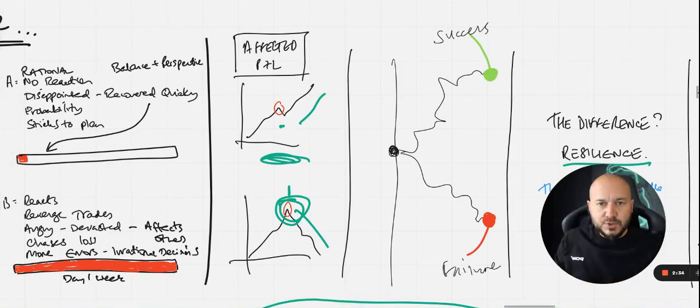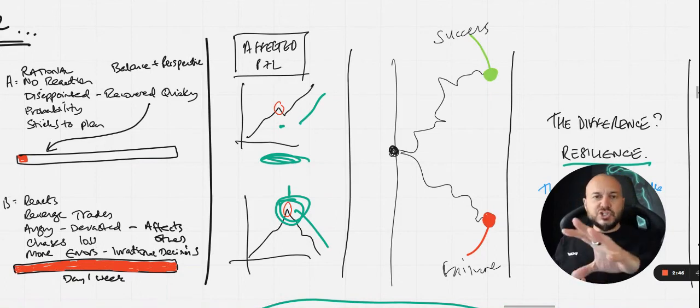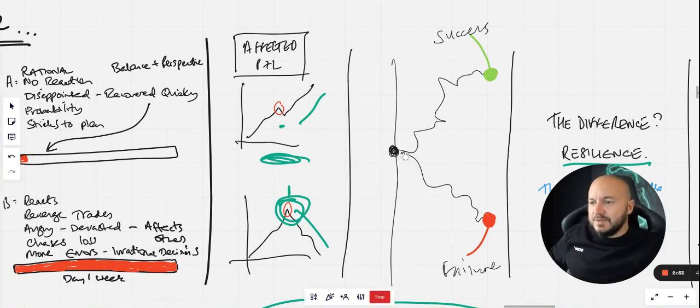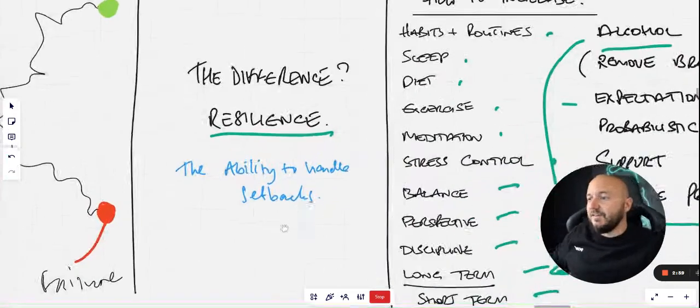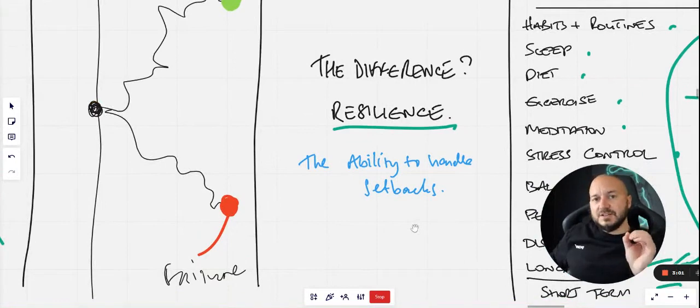Trader B, they make poor decisions, emotional decisions due to their low level of resilience. And that totally has a massively negative effect compared to trader A. But remember, the same thing happened. So we can have the same event happen to me and somebody else because I'm more resilient and I'm at peace with my decisions and outcomes and understand what I can and what I can't control. Then my trajectory after that same initial setback can be hugely different to another trader.